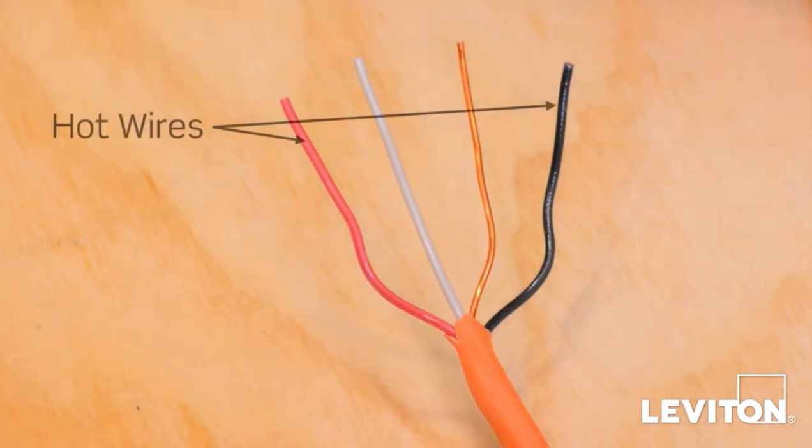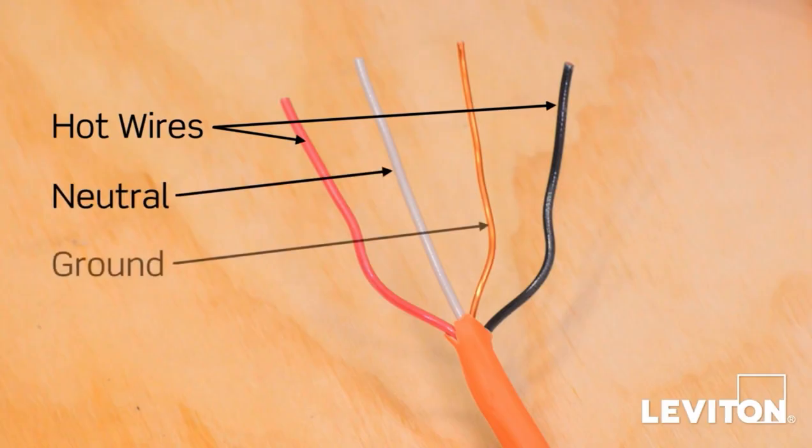In this example, there is one black wire and one red wire, which are the hot wires, a white wire that is the neutral, and bare copper which is the ground.